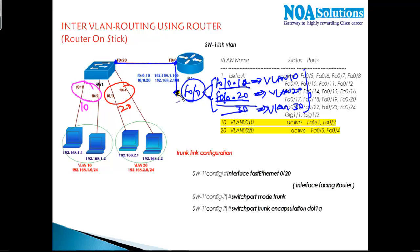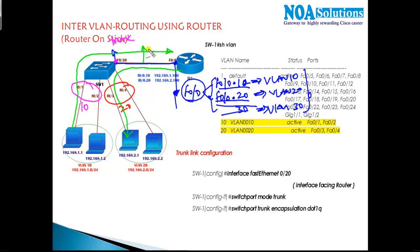This minimizes the number of gateways required. We can manage multiple VLANs with one common physical interface by using sub-interfaces. The link connecting the switch to the router must be configured as a trunk, because when VLAN 10 traffic goes to its gateway sub-interface and then routes to VLAN 20, the link carries multiple VLAN traffic. A trunk link is what carries multiple VLAN traffic in switching concepts.